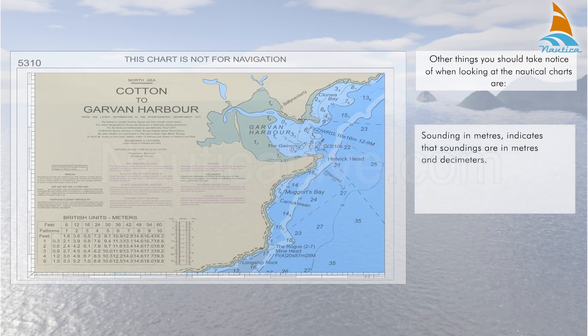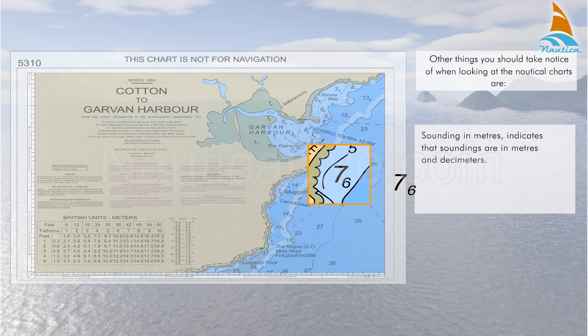Soundings in meters indicates that soundings are in meters and decimeters. For example, if you see a spot depth of a large seven followed by a small six, this indicates a depth of seven meters and six tenths of a meter.